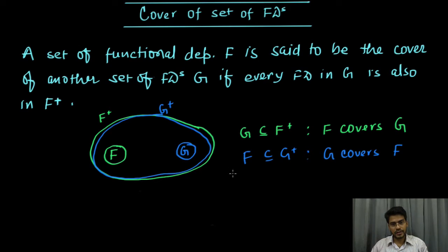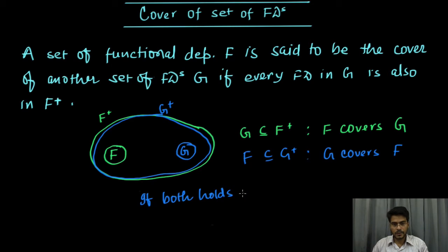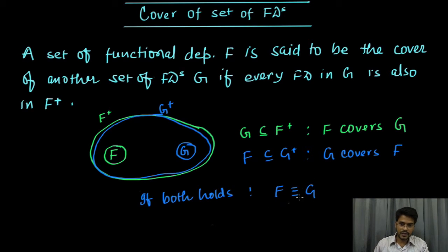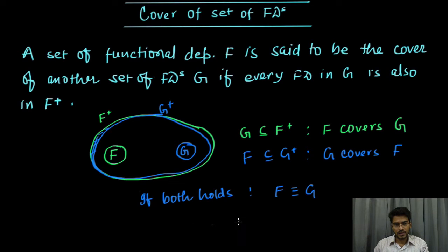If both conditions hold together — that is f is a subset of g plus and g is a subset of f plus — then f is equivalent to g. One thing we can note here is that if these conditions hold and f is equivalent to g, it means f plus and g plus are equal.